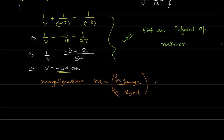At the same time, we have another formula which is m equals to minus v by u for the mirror. Now, if we look here, v is minus 54 cm and u is minus 27 cm.